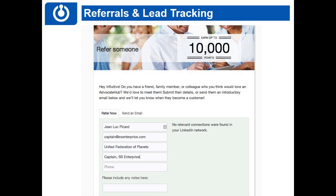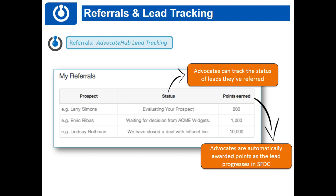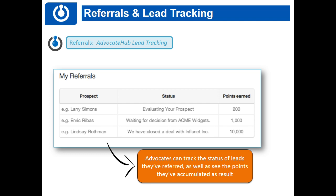For your advocate, they go to the referrals tab or open a referral challenge card and fill in the person they want to refer — name, email, and whatever information you've made mandatory. From that point, the person they've referred appears in the My Referrals section, which shows your advocates who they've referred, the status of that referral, and how many points they've earned so far. Let's go into the application to look at what happens on the back end when someone refers someone.